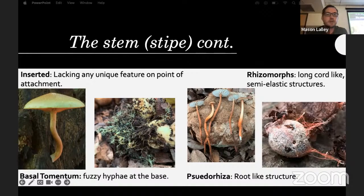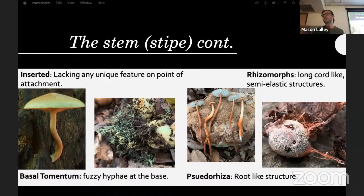Rhizomorphs are long, cord-like, semi-elastic structures. You'll often find them with Armillaria. Sometimes if you pick a mushroom and pull on it you'll see a little cord-like structure — if you carefully follow it down you can find it attached to something, like a Gymnopus growing off of a live oak acorn.